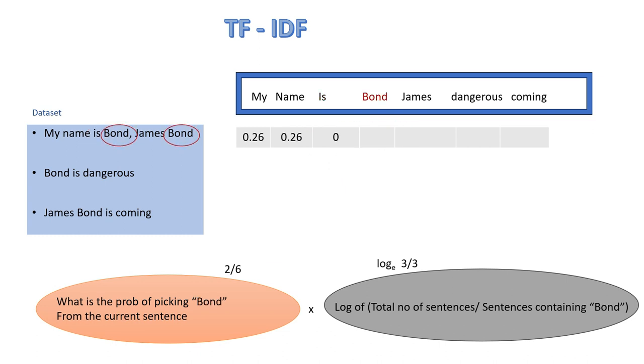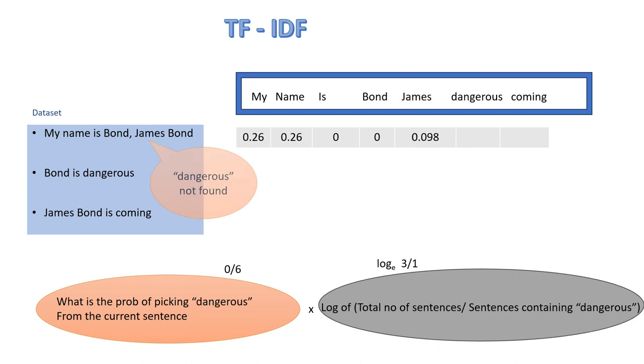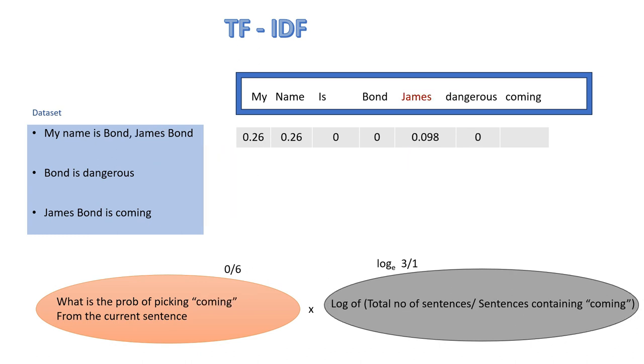We repeat this process for all the words. And after seven iterations, because we have seven words in our vocabulary, we have our vector for the first sentence. Congratulations.